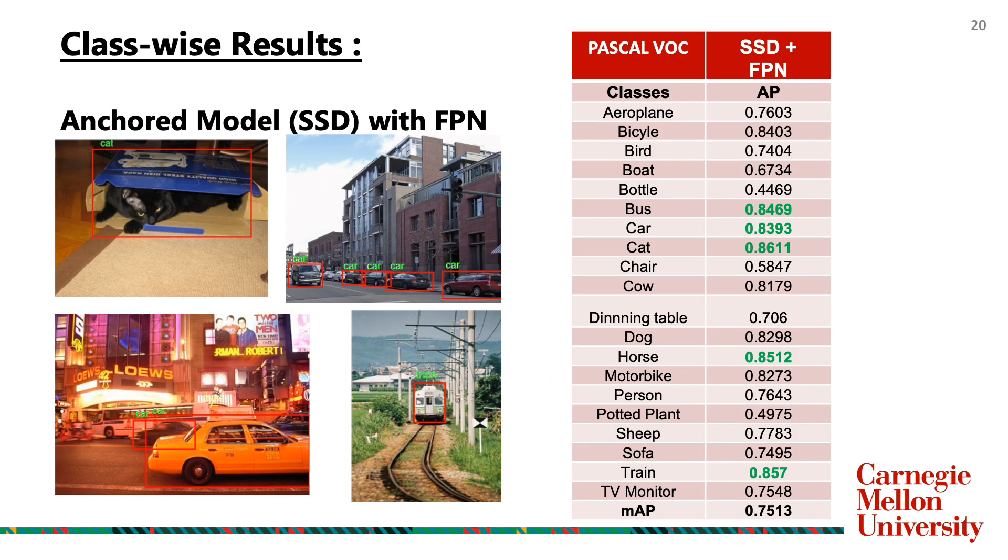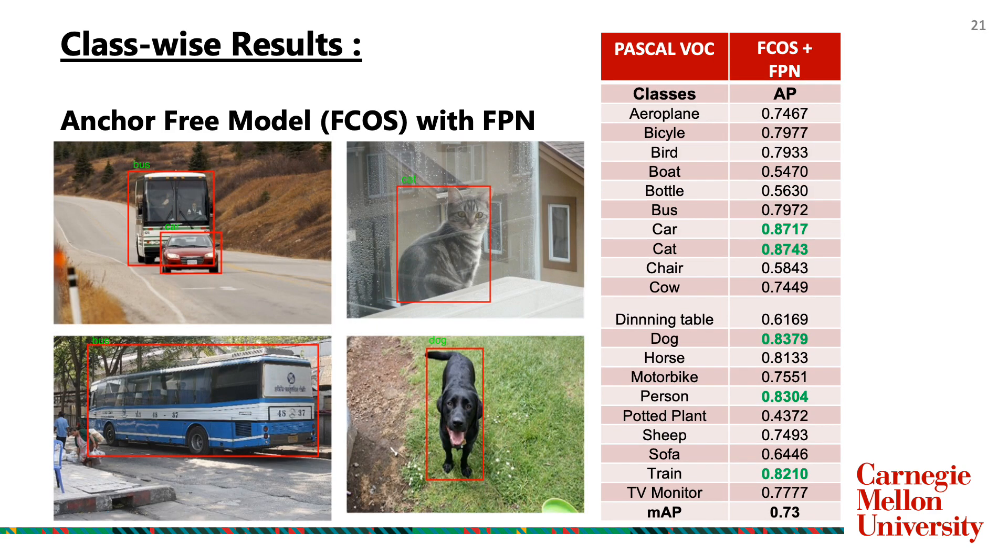We perform several experiments and evaluate our results on the Pascal VOC 2007 test dataset. First, we combine the single-shot detection anchored model with the FPN and achieve an mAP of 75.13. Next, we perform the second experiment combining FCOS with FPN on the same dataset and achieve an mAP of 73.13. We notice that even though we make use of anchor-free models, we achieve accuracy almost at par with state-of-the-art anchored models.